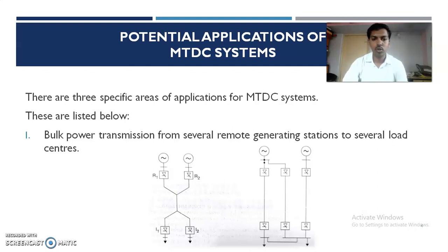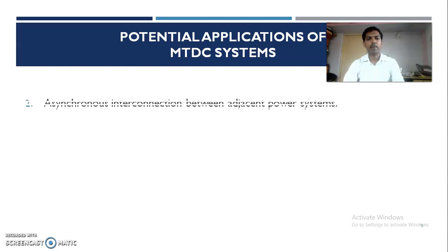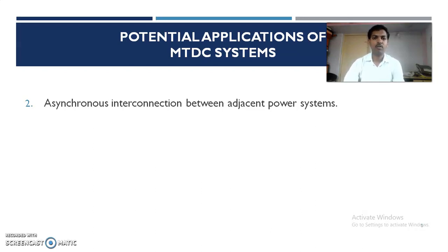Two figures are given illustrating this. In both figures, there are two generating stations and two load centers. In the first figure, a simple MTDC network is shown with two generating stations, two rectifiers, and two inverters — the generating stations are connected to the rectifiers and the inverters are connected to the load centers. In the second figure, one additional line is shown for exchanging power between the two links, which is part of the bulk power transmission arrangement.